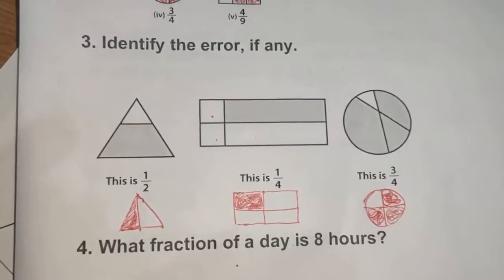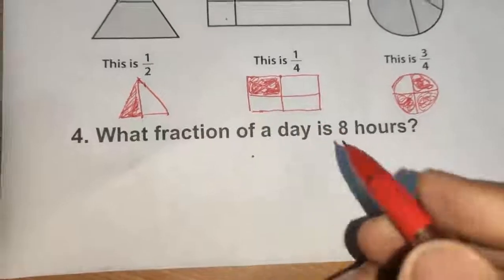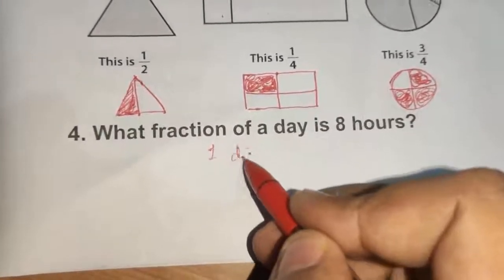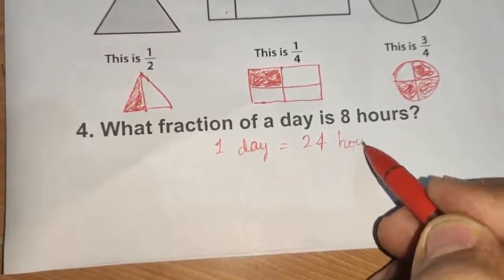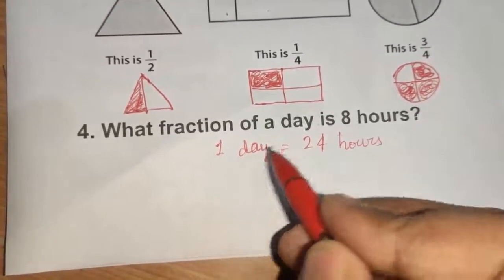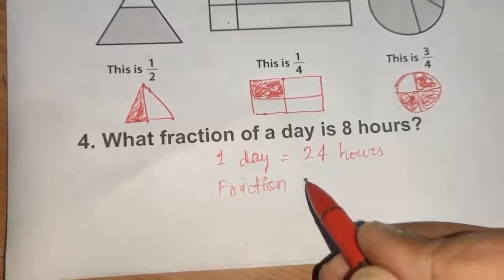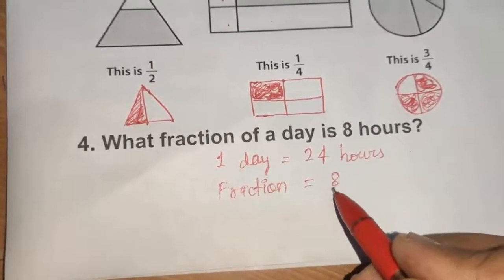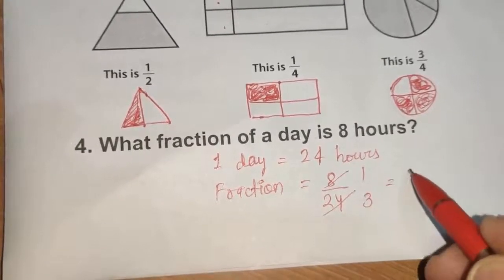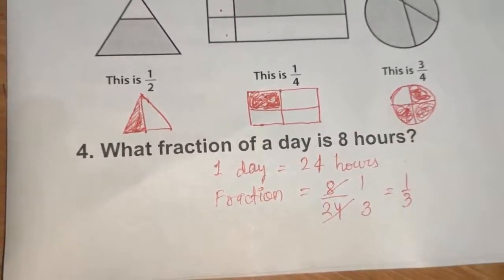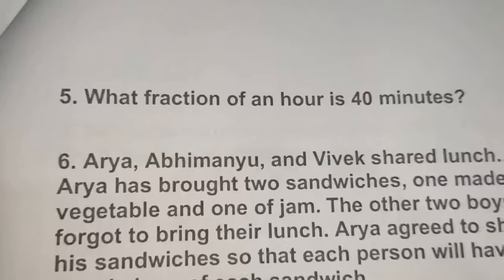Question number 4: what fraction of a day is 8 hours? We know 1 day equals 24 hours. The fraction of 8 hours is 8/24. Reducing by 8 gives us 1/3. So the answer is 1/3.